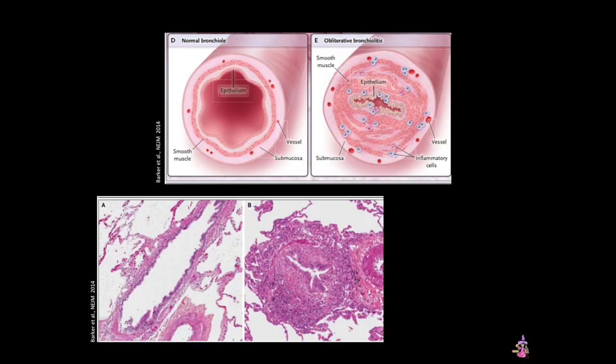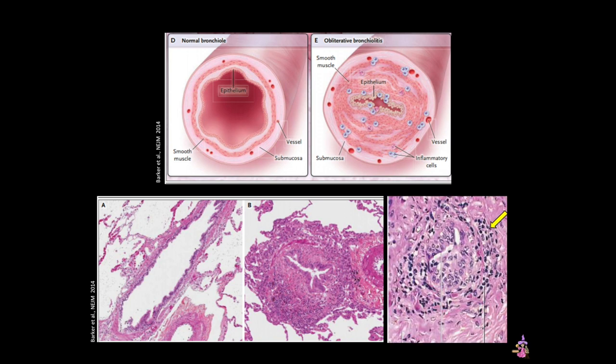These bronchioles show a reduction in the lumen due to inflammatory cell infiltrates and obstructive fibrosis. The diverse medical conditions and exposures that result in this disease suggest that it may be a final common pathway, in which various insults lead to similar microscopic, physiological, and clinical results.